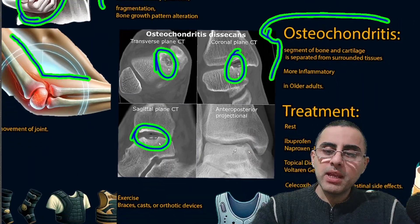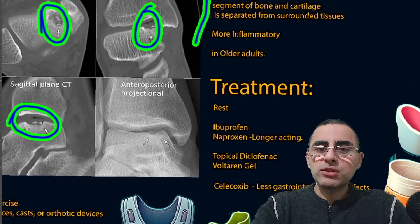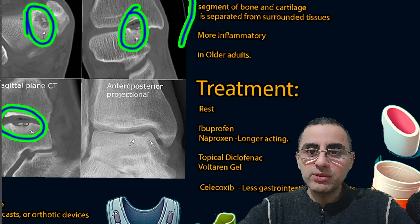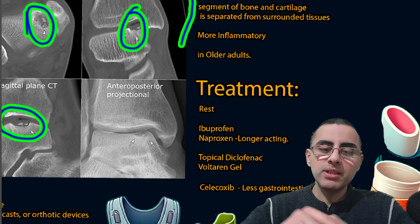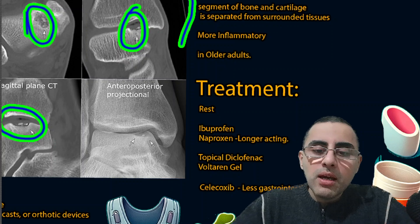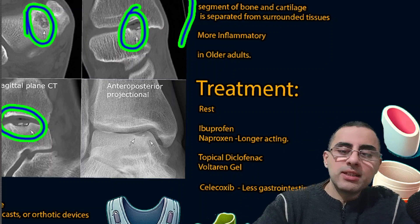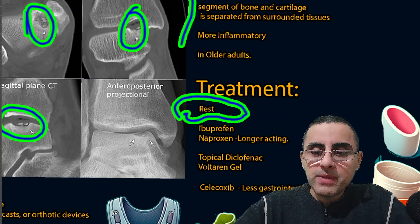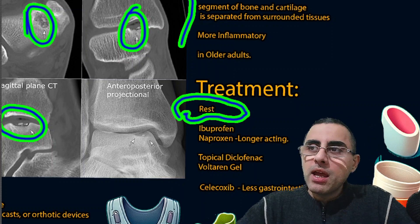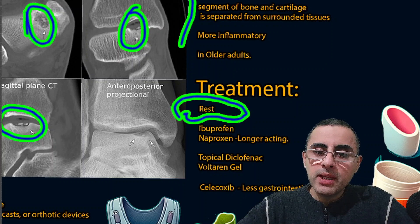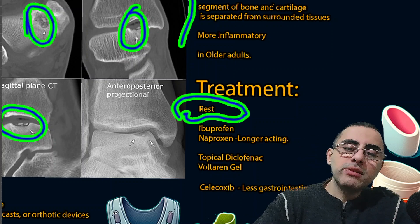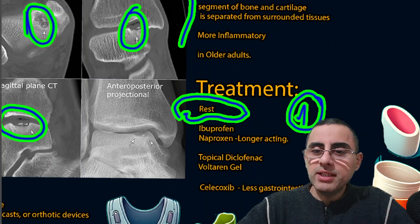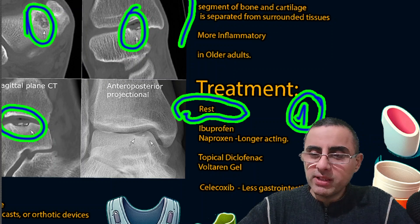Now let's talk about treatment of osteochondrosis and osteochondritis — they have similar treatments in many cases. The first treatment is rest: avoid additional stress and additional pressure on the affected joint. Avoiding repetitive trauma is a very important part of treatment.